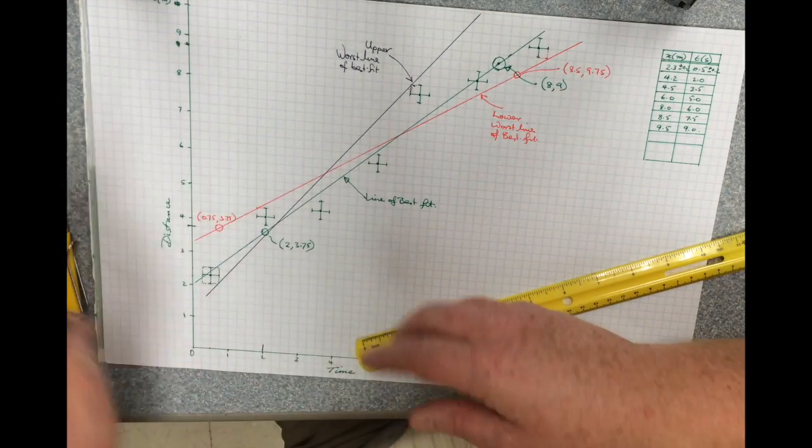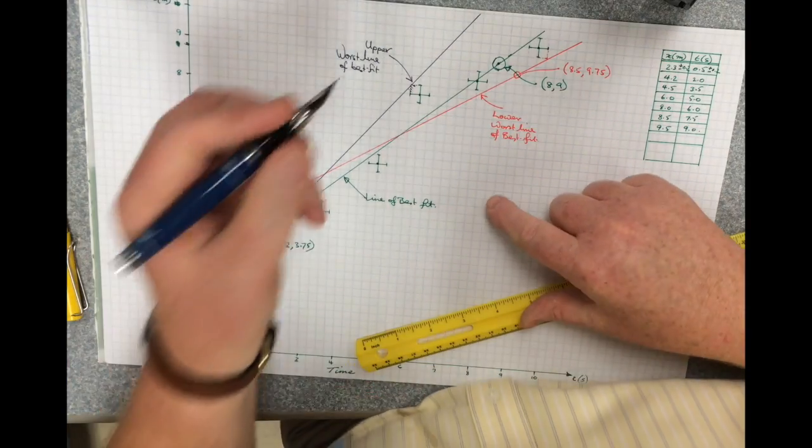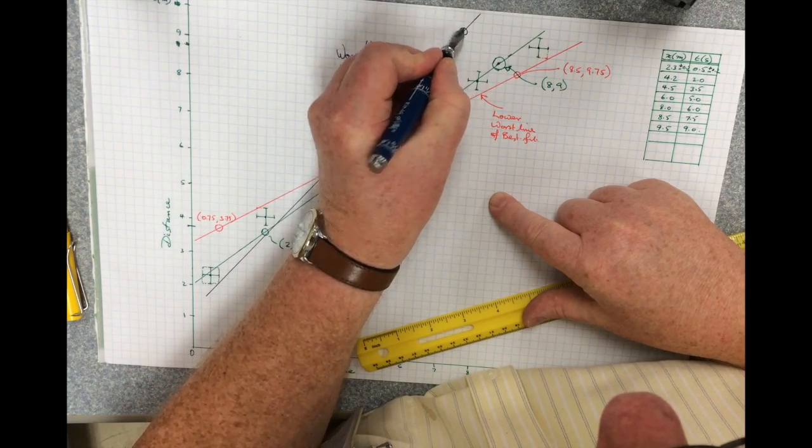And now I'm going to look at the upper worst line of best fit. And I've got a good intersection point there.